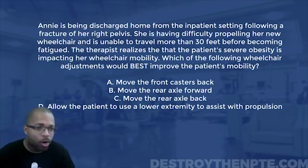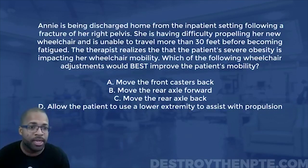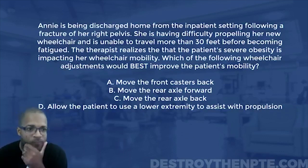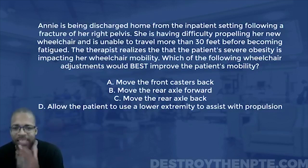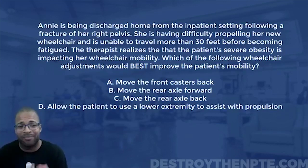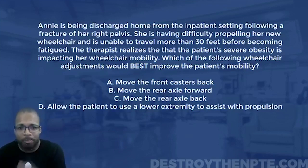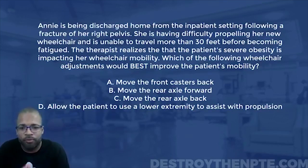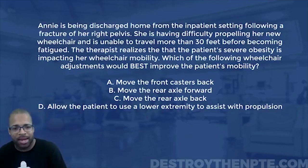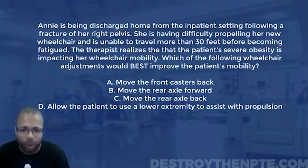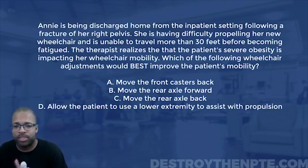All right, let's hit it. Annie is being discharged home from the inpatient setting following a fracture of her right pelvis. She is having difficulty propelling her new wheelchair and is unable to travel more than 30 feet before becoming fatigued. The therapist realizes that the patient's severe obesity is impacting her wheelchair mobility. Which of the following wheelchair adjustments would best improve the patient's mobility? A) move the front casters back, B) move the rear axle forward, C) move the rear axle back, and D) allow the patient to use a lower extremity to assist with propulsion.